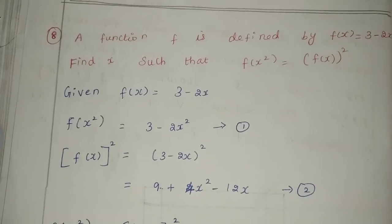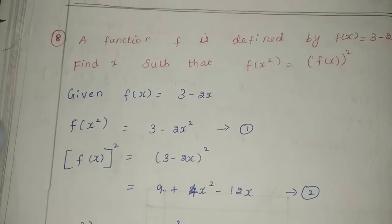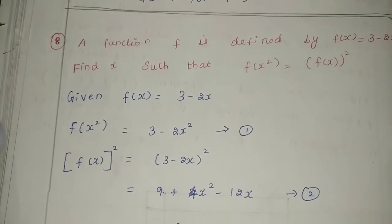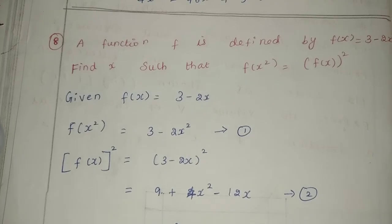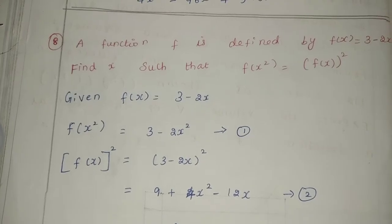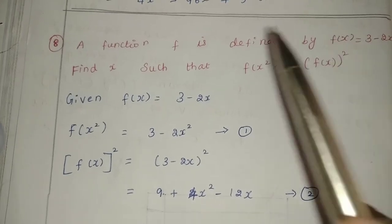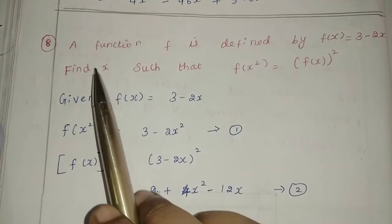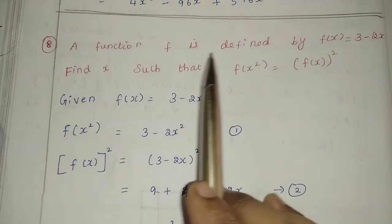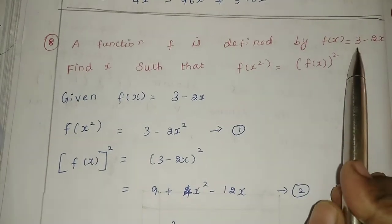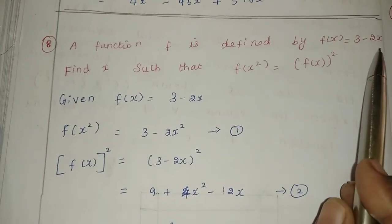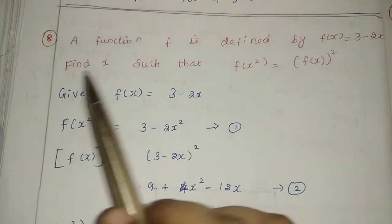Hello friends, I am Saranya. Here we will see 10th standard math chapter 1, exercise 1.3, 8th sum. A function f is defined by f of x equal to 3 minus 2x.